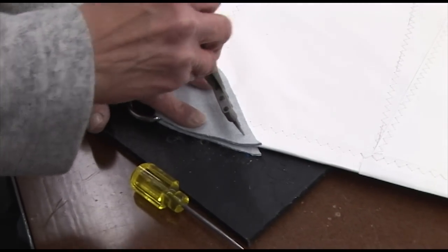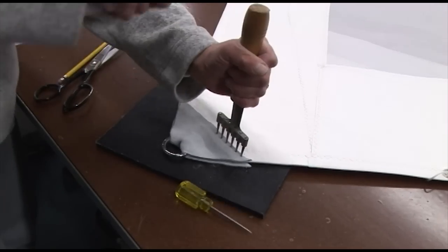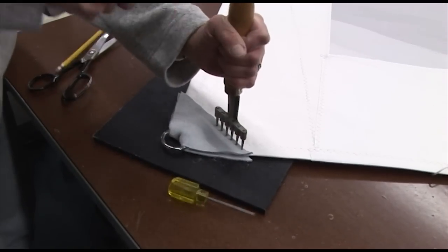You could use an awl or a nail to pre-punch holes to make it easier for your hand sewing. You probably won't have a tool like this. This is typically only found in loft situations. This kind of speeds up our process.